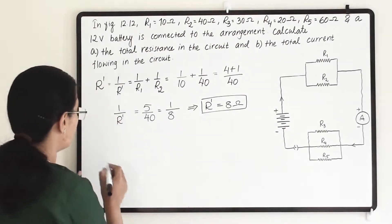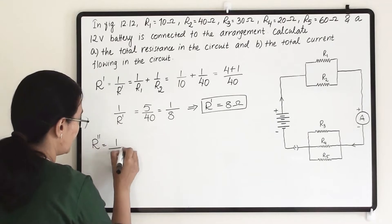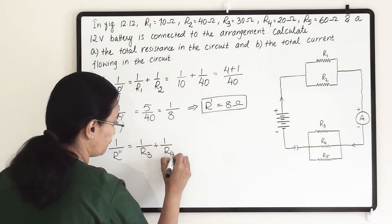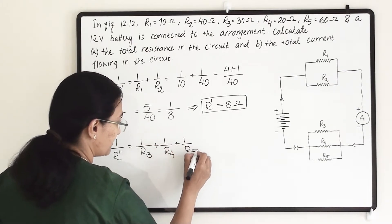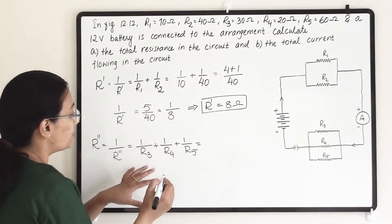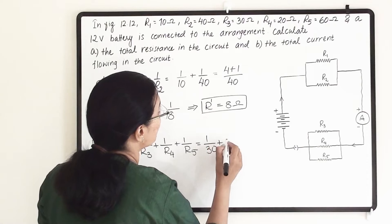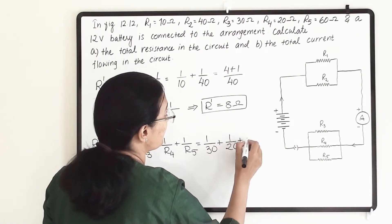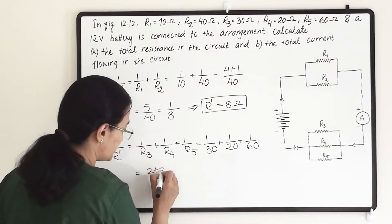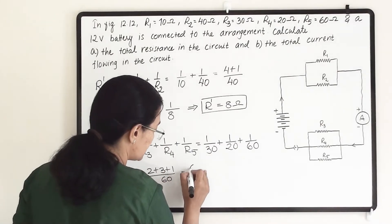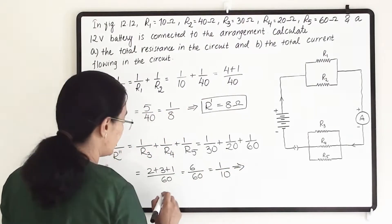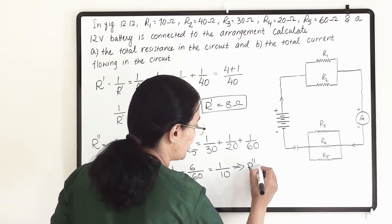Similarly, for the second unit, which I will call R double dash: 1 divided by R double dash equals 1 divided by R3 plus 1 divided by R4 plus 1 divided by R5, because all three are in parallel connection. Putting in the values: 1 divided by 30 plus 1 divided by 20 plus 1 divided by 60. The LCM is 60, so we write 2 plus 3 plus 1 divided by 60, which gives us 6 divided by 60, which equals 1 divided by 10.